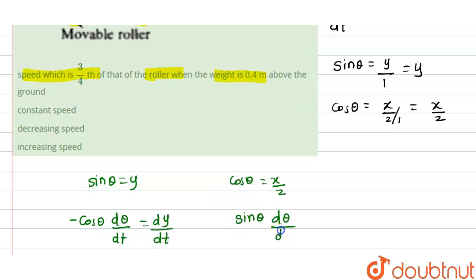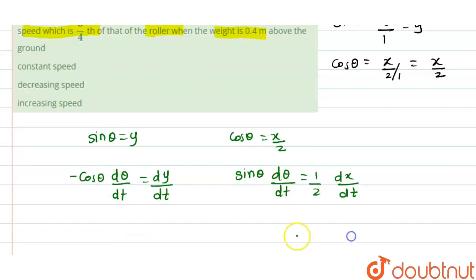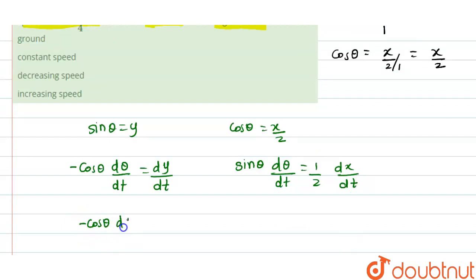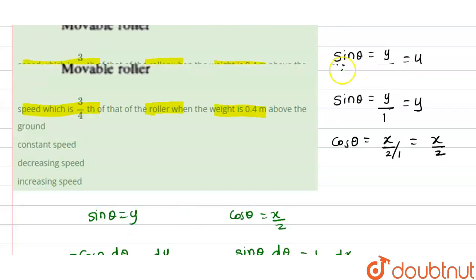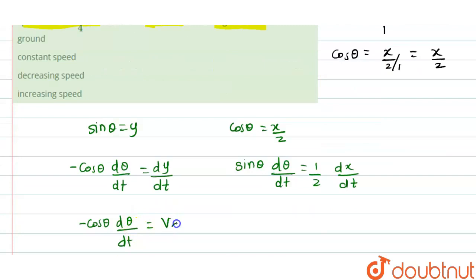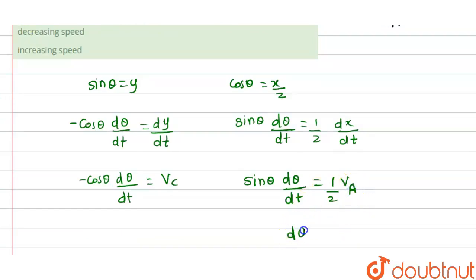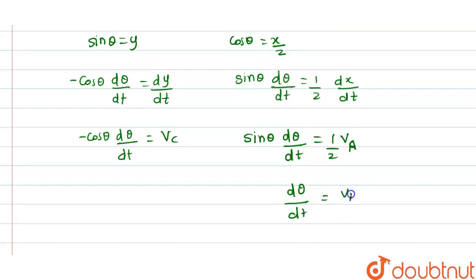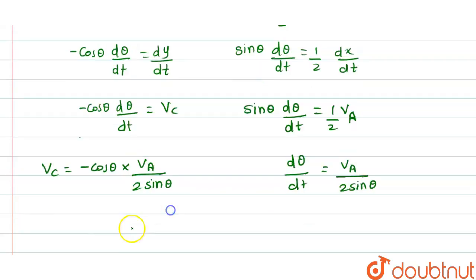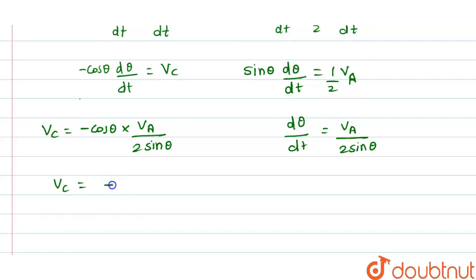From the differentiation of sin θ: cos θ · dθ/dt = dy/dt = vc. From differentiating cos θ: −sin θ · dθ/dt = dx/dt / 2, giving dθ/dt = va / (2 sin θ). Substituting this into the first equation: vc = −cos θ · va / (2 sin θ) = −va / (2 tan θ). Taking the magnitude, the expression for the speed of the mass is vc = va / (2 tan θ).